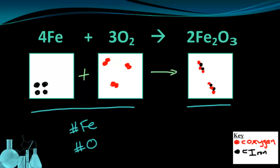So for iron, we have four on the reactant side, and on the product side, we also have four. For oxygen, we have six on the reactant side and six on the product side. Notice how every atom that we started with on the reactant side is still present in the product. We haven't lost any atoms. We haven't gained any atoms out of nowhere.